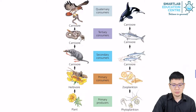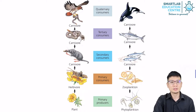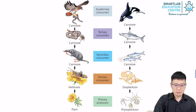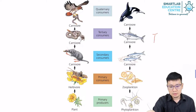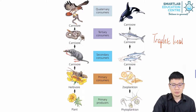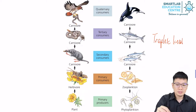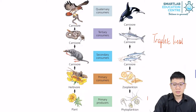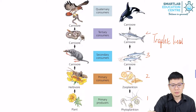The consumers can be divided into primary, secondary, or tertiary depending on the trophic level. The trophic level refers to which part of the food chain the organism falls under. Producers are trophic level one, primary consumers level two, secondary consumers level three, tertiary consumers level four, and quaternary consumers level five.